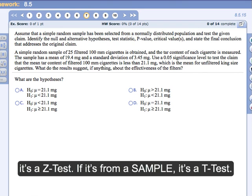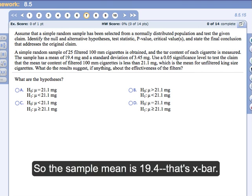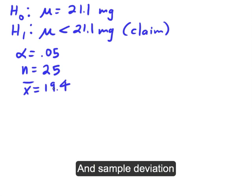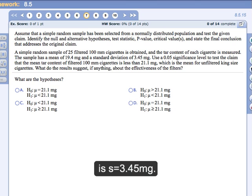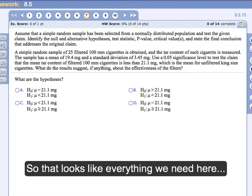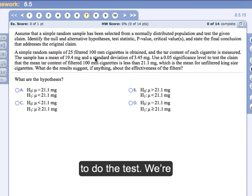Read that sentence very carefully. The sample has a mean of 19.4 and a standard deviation of 3.45. So that deviation is from the sample. It's s, not sigma. So we're going to have a t-test, 8.5, because the deviation is from a sample. Does that make sense? That's the key question. Where's the deviation from? If it's from the population, it's a z-test. If it's from a sample, t-test. So the sample mean is 19.4, that's x-bar is the notation. And then the sample deviation, that's s, is 3.45 milligrams.